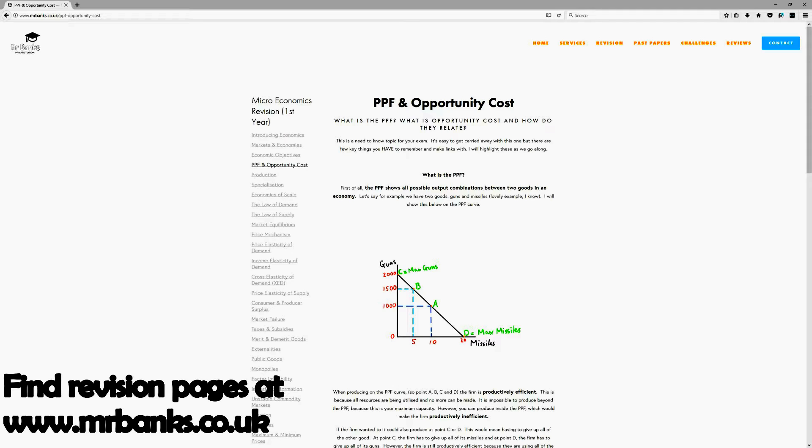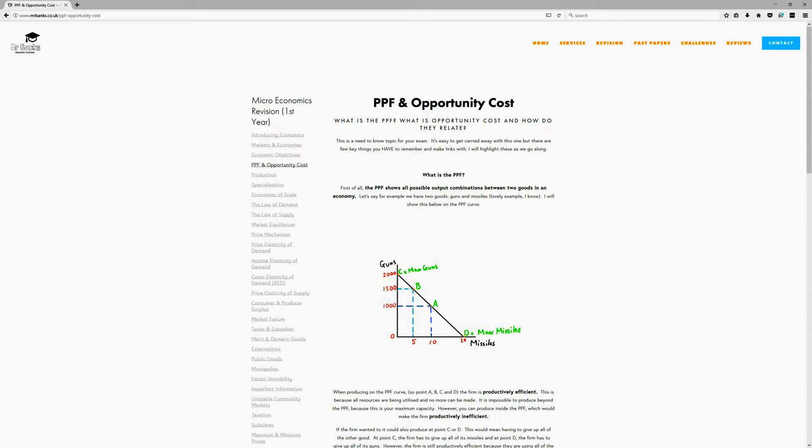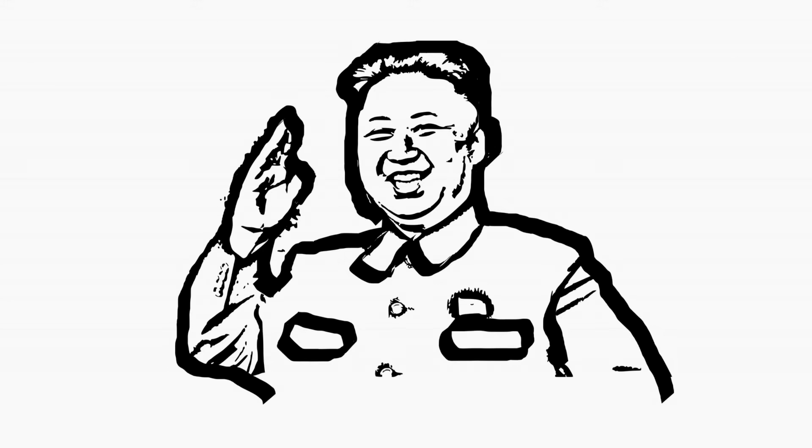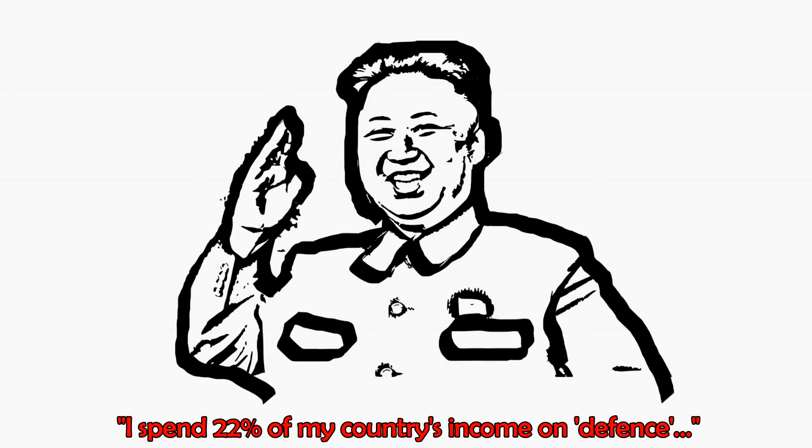Let's take a look at our example for today. With all the news on North Korea going on I thought it might be a good idea to apply this to the PPF curve. North Korea is a dictator-run state and they allegedly spend around 22% of the country's yearly income, also known as GDP, on defense.